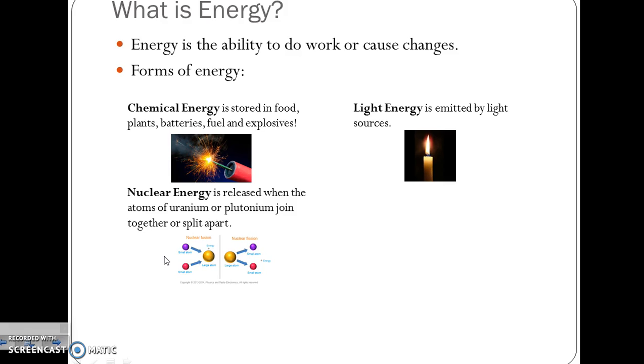Nuclear energy is released when the atoms of uranium or plutonium join together or split apart. Mechanical energy is the energy of an object in motion, what we call movement, for example these windmills.